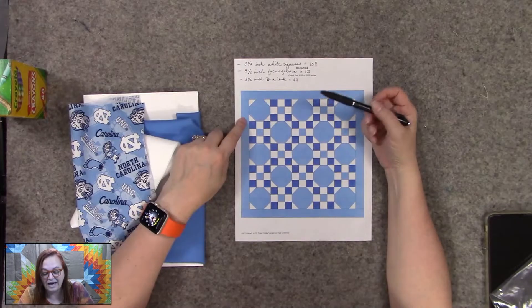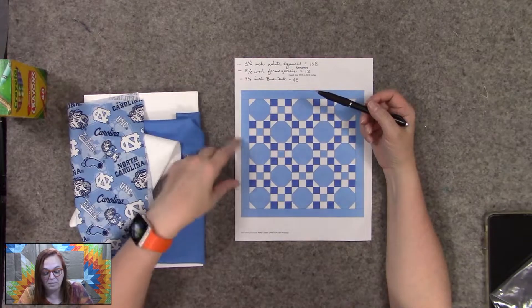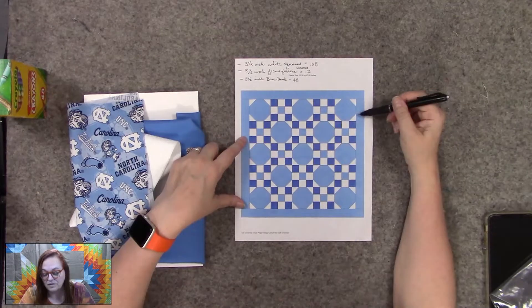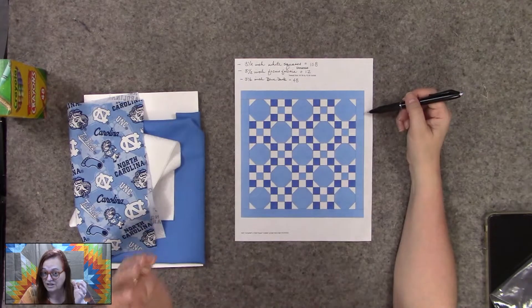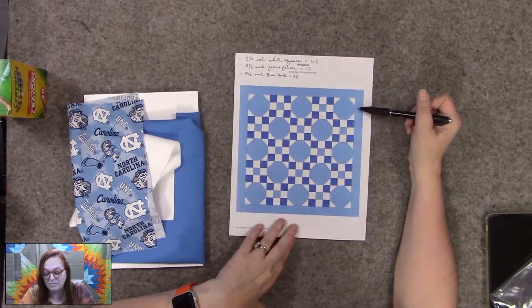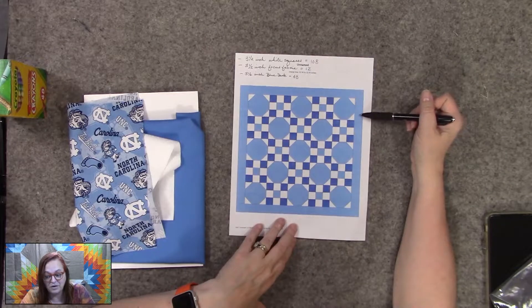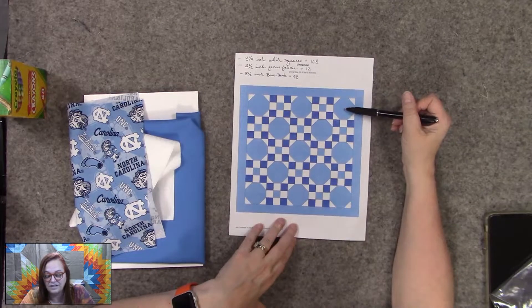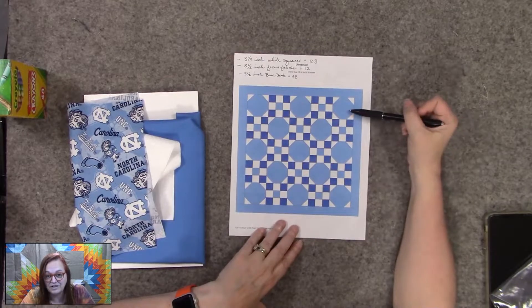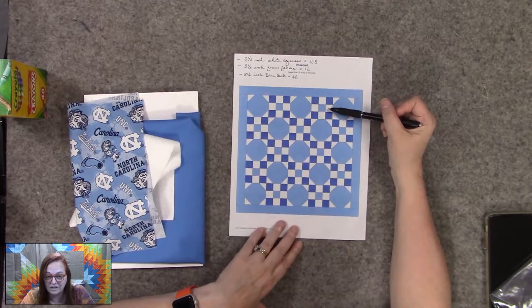You can kind of see that in my pattern. Then I also wanted to make sure that I had the focus fabric as my border, so this ended up being a three and a half inch border. It allowed me to do two at three and a half inches.